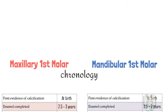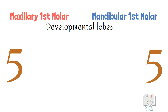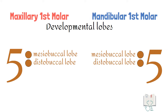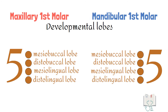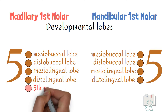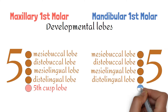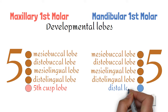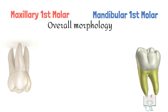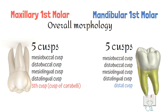Both molars develop from five developmental lobes: mesiobuccal lobe, distobuccal lobe, mesolingual lobe, and distolingual lobe are the same in both, but the fifth lobe in maxillary first molar is the fifth cusp lobe, and in mandibular first molar it is the distal lobe. Since one lobe develops one cusp, both teeth have five cusps.